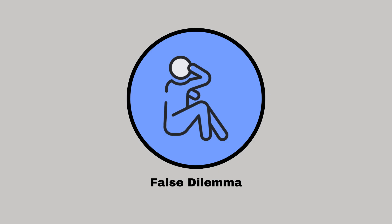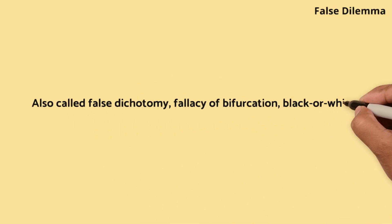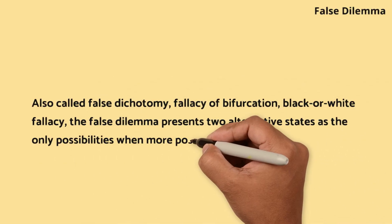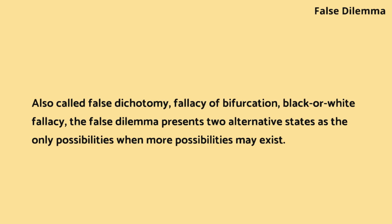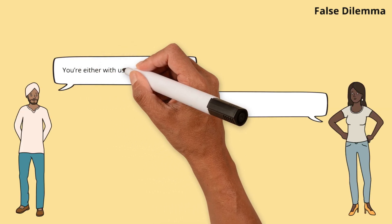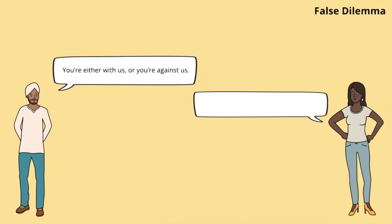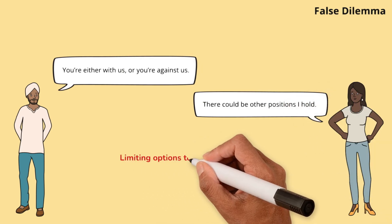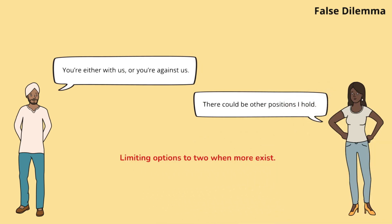False dilemma, also called false dichotomy, fallacy of bifurcation, or black-or-white fallacy. The false dilemma presents two alternative states as the only possibilities when more possibilities may exist. Daniel presents a choice as being between only two extremes. Jessica reveals the oversimplification, encouraging consideration of all possible options.